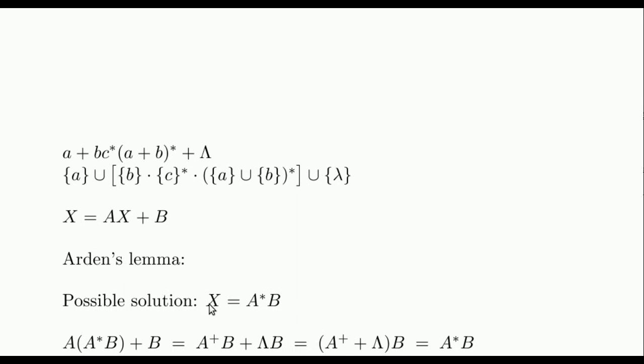In the first place, we see that a possible solution is A star B. Replacing X by A star B in the right hand side of the equation, we get this expression. On the one hand, A concatenated with A star B is A plus B. On the other, B coincides with lambda concatenated with B, since lambda is the neutral element of concatenation. Here we are taking out the common factor B.